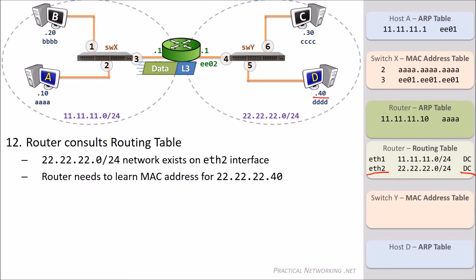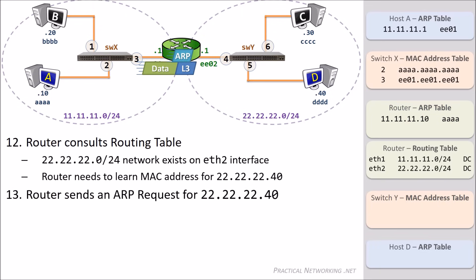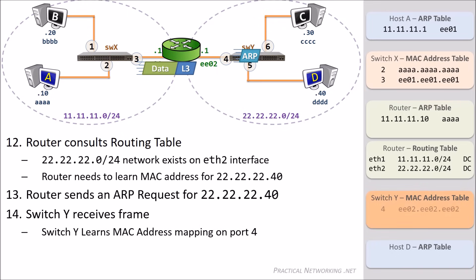But the router doesn't have an ARP entry for Host D, so it must use the Address Resolution Protocol to discover it. The router will send an ARP request for Host D's IP address — essentially asking: if the IP 22.22.22.40 is out there, send me your MAC address. The frame will arrive on SwitchY via port 4. The switch will learn that the device on port 4 owns the MAC address EEE02.